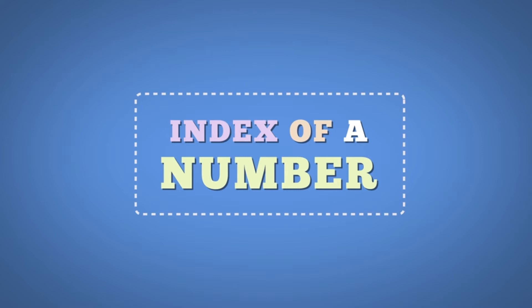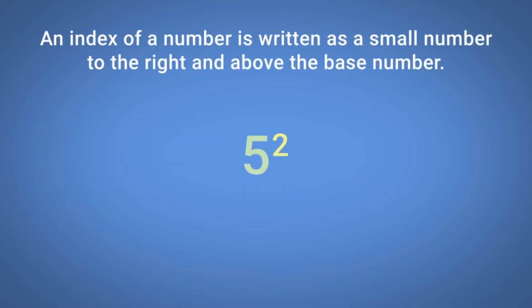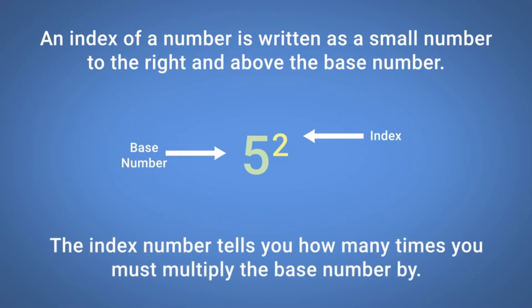Index of a number. An index of a number is written as a small number to the right and above the base number. The index number tells you how many times you must multiply the base number by.